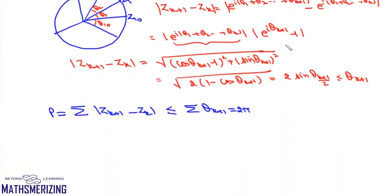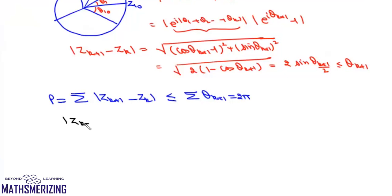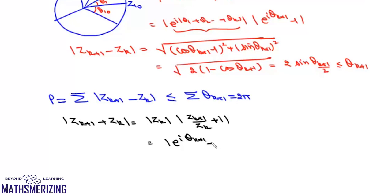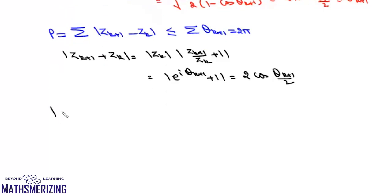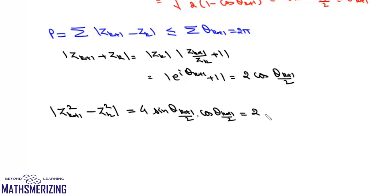For statement Q, we find |z_{k+1} + z_k|. Writing it as |z_k| · |z_{k+1}/z_k + 1| = 1 · |e^(iθ_{k+1}) + 1|, which gives 2cos(θ_{k+1}/2). Multiplying: |z_{k+1}² - z_k²| = |z_{k+1} - z_k| · |z_{k+1} + z_k| = 2sin(θ_{k+1}/2) · 2cos(θ_{k+1}/2) = 2sinθ_{k+1}, which is less than or equal to 2θ_{k+1}.